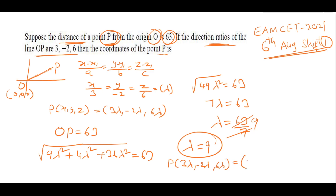Substituting λ = 9: P = (3×9, −2×9, 6×9) = (27, −18, 54). This is the required point P.